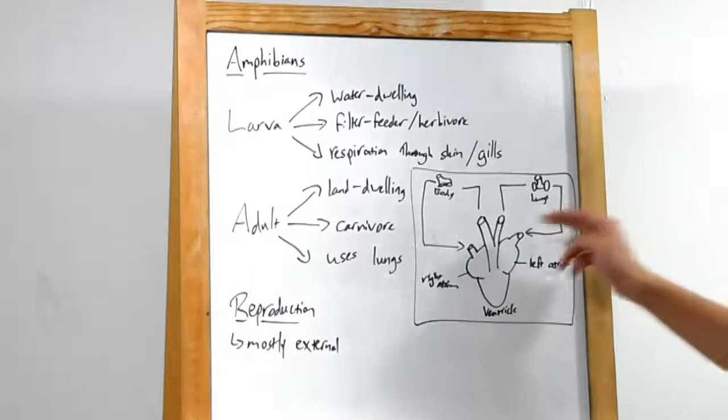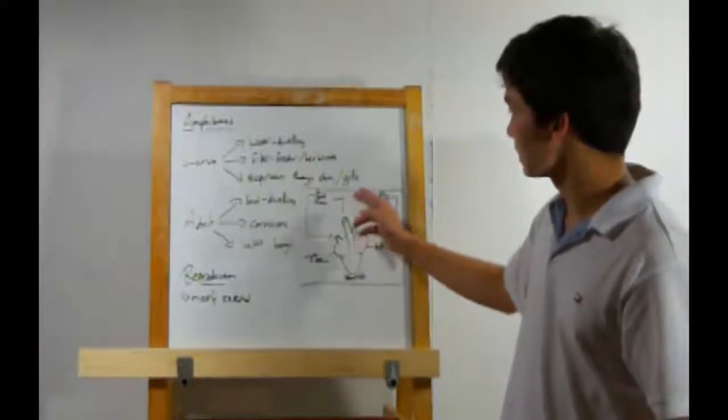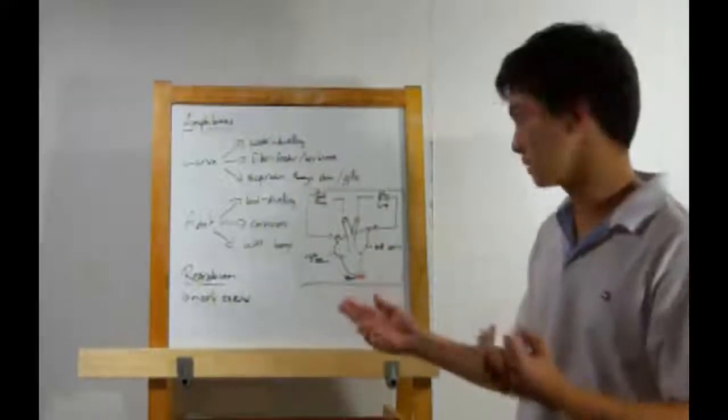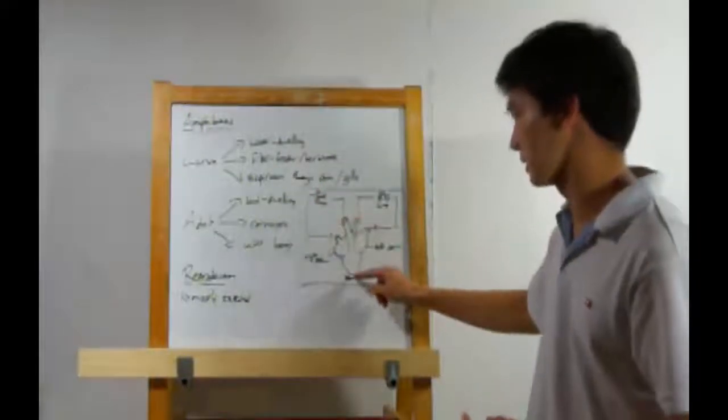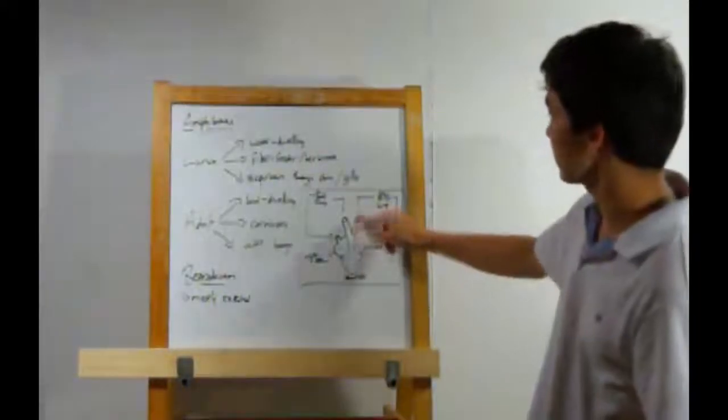And oxygen-rich blood will come in through the left atrium. Alright, let's follow along a cycle. Oxygen-rich blood will go through the body, and the oxygen is depleted. It then returns to the heart and comes in the right atrium. The heart will then pump it out, and you see it'll enter a second loop.